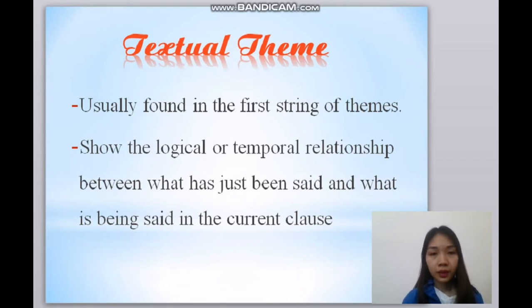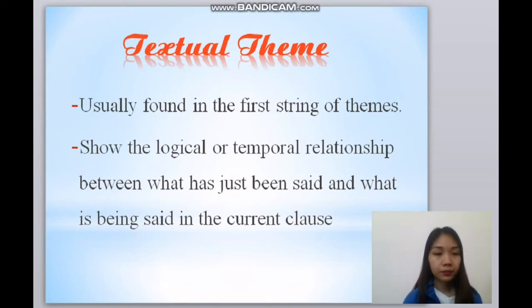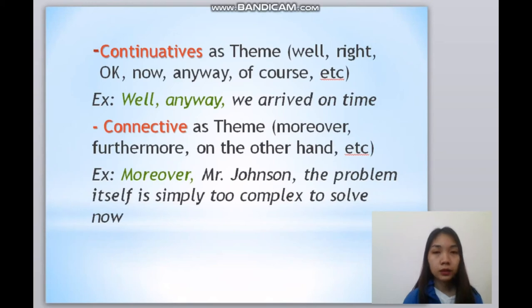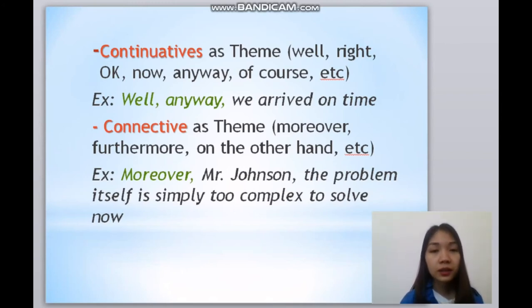Now we come to the second part: textual themes. These are easily found in the first string of themes and show the logical and temporal relationship between what has just been said and what is being said in the current clause. Textual themes divide into two types. Number one is continuative — words like 'well,' 'alright,' 'okay,' 'now,' 'anyway,' 'of course.' For instance: 'Well, anyway, we are right on top.' The second type is conjunctive — words like 'moreover,' 'furthermore,' 'on the other hand,' 'for example.' For instance: 'Moreover, the problem itself is simply too complex to solve now.'